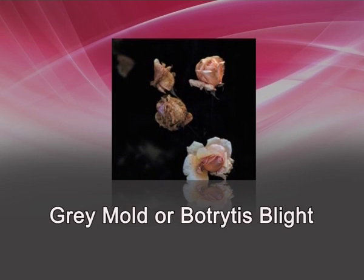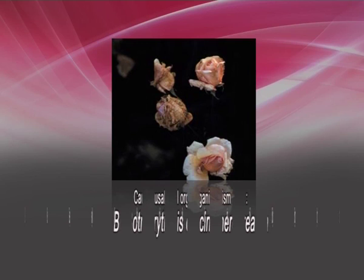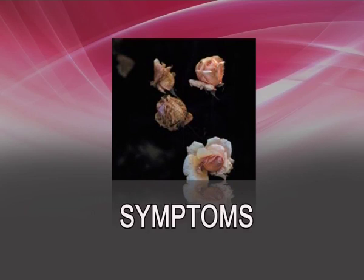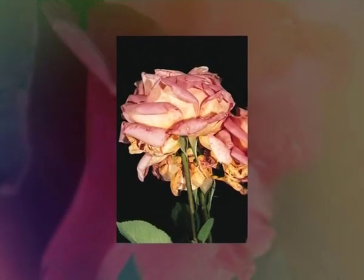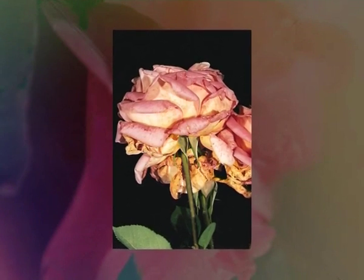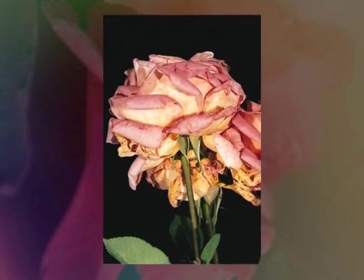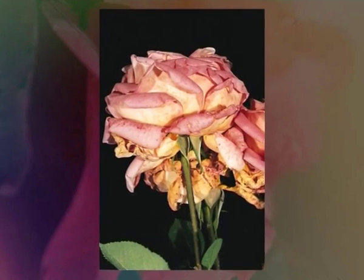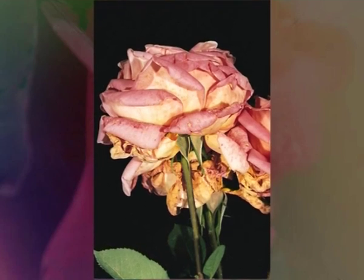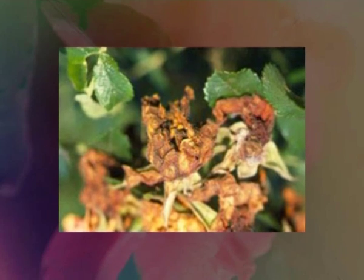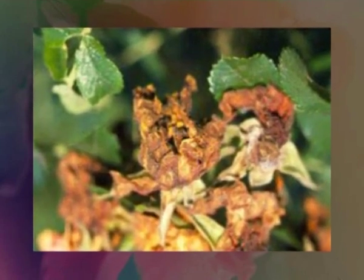The next disease is grey mold or botrytis blight. It is caused by Botrytis cinerea. Symptoms: water-soaked lesions appear on leaves, which spread very fast. On flowers, small water-soaked spots occur, resulting in immature fading and drying of petals, which drop ultimately.